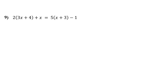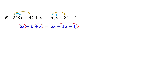So first, we will remove the parentheses on both sides using the distributive property. On the left, distribute the 2 to both 3x and 4. 2 times 3x is 6x, and 2 times 4 is 8. On the right, distribute the 5 to both x and 3. 5 times x is 5x, and 5 times 3 is 15. Now notice there are like terms on each side of the equation. So the next step is to combine them. On the left, 6x plus x gives us 7x. On the right, 15 minus 1 is 14.